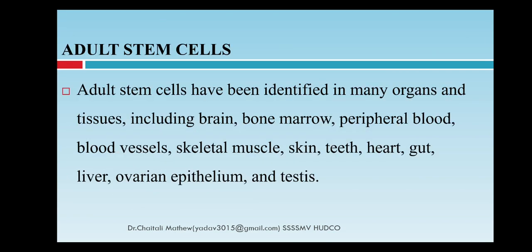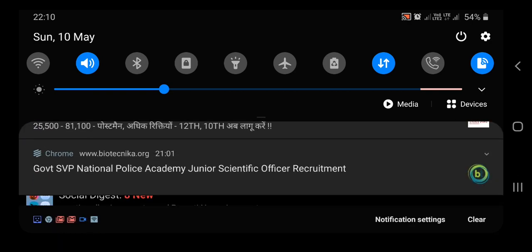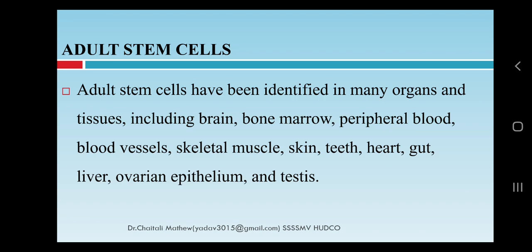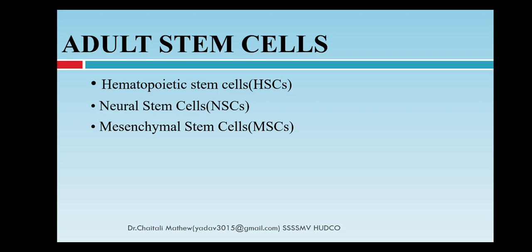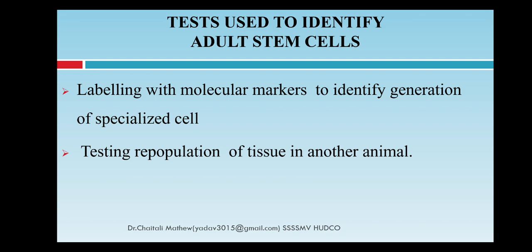Adult stem cells have been identified in many organs and tissues, including the brain, peripheral blood, blood vessels, skeletal muscles, skin, teeth, heart, gut, liver, ovarian epithelium, and testes. These can be identified with the help of molecular markers, by testing the generation of specialized cells, and by repopulation of stem cells in another organism or animal — which is also used to identify stem cells.